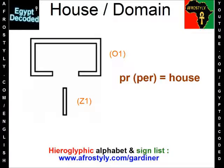Hotep. This time we are dealing with the word for house or domain, and it is PER. Remember, this is an African language, so the R is supposed to be rolled. So instead of saying PER, try to say PER.